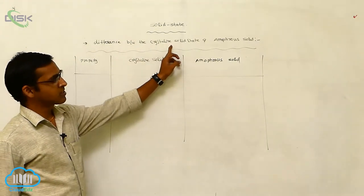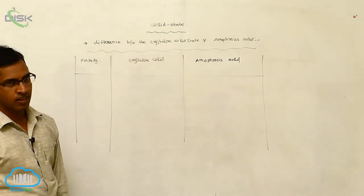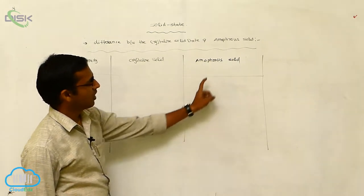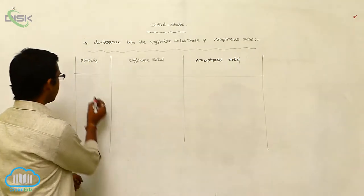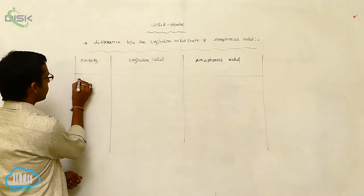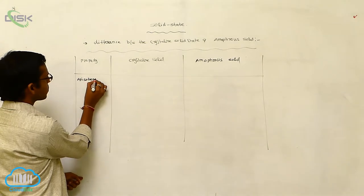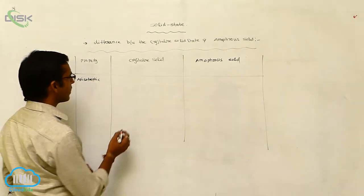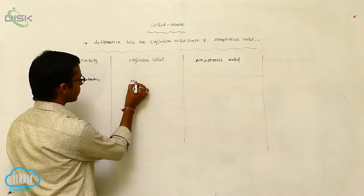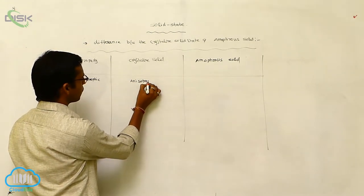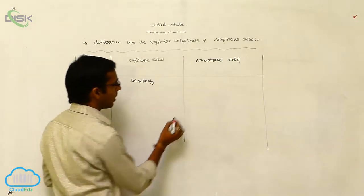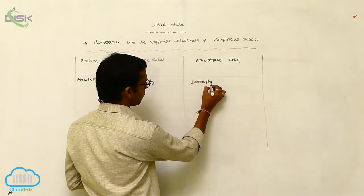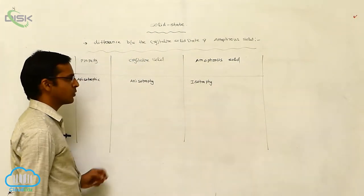We will now discuss differences between crystalline solid state and amorphous solid state. Consider three columns: property, crystalline solid, and amorphous solid. The first property is anisotropy. Crystalline solids are anisotropic, so they are called anisotropic substances. But amorphous solids are isotropic, so they are called isotropic substances.